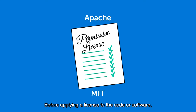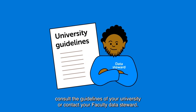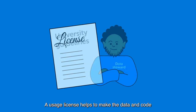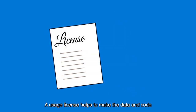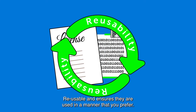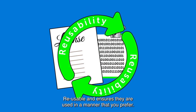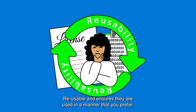Before applying a license to the code or software, consult the guidelines of your university or contact your faculty data steward. A usage license helps to make the data and code reusable and ensures they are used in a manner that you prefer.